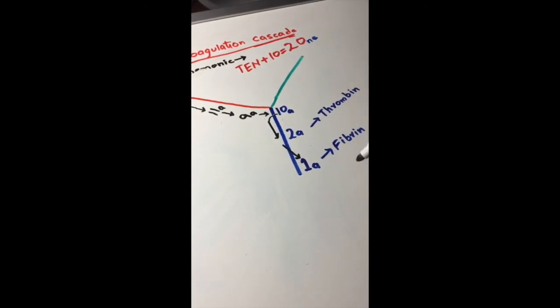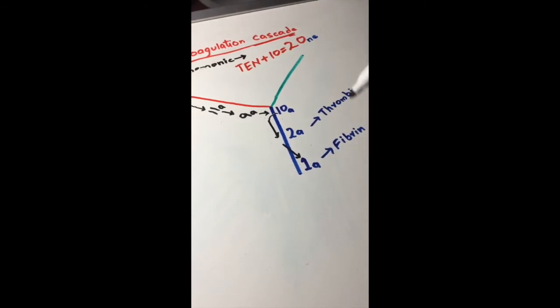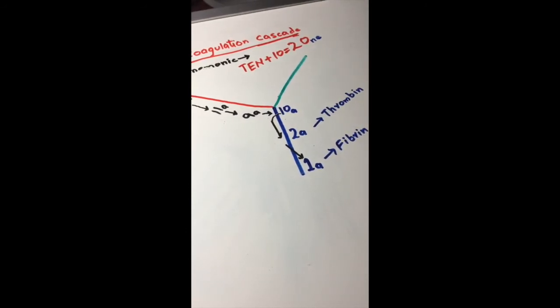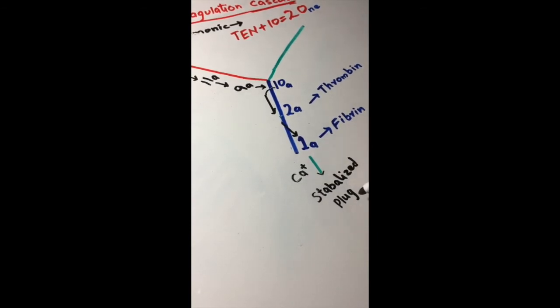Some people confuse thrombin and fibrin, but you gotta remember this: we're going down to up starting from 1 going to 12, and alphabetically F comes first and T comes later. That's how you can remember it. And 1a uses calcium to make a stabilized plug.